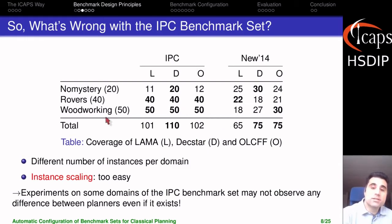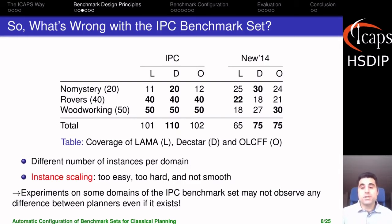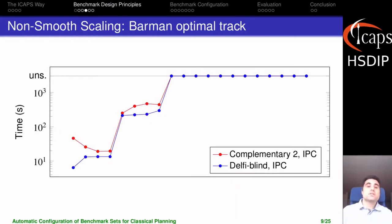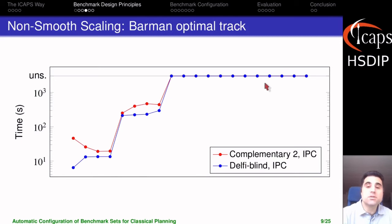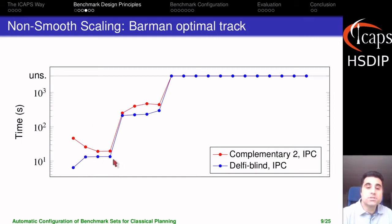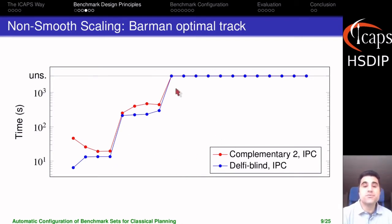The problem in those two domains was that instances were too easy, so all planners solved all of them even though some planners are actually better than others. We also have examples where instances are too hard, meaning all planners solve zero instances. There are also cases where instance scaling is not smooth. Let me showcase this with the Barman domain from the optimal track. Here we see the performance of two planners — the runtime on each instance. Some instances are relatively easy, some are really hard, but the scaling in between is not smooth: four instances of about the same difficulty, then a big jump, then four more, then another big jump. When scaling looks like this, we don't really see differences in coverage because the jumps are so large.